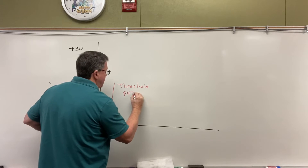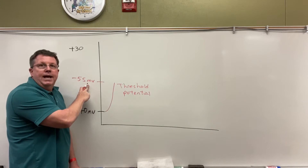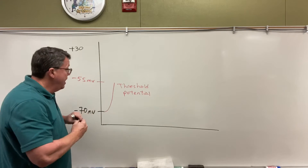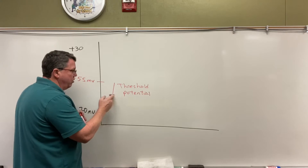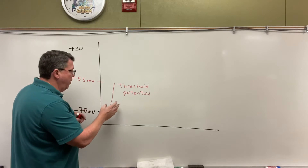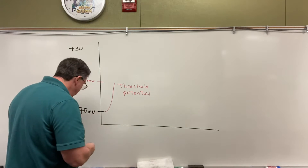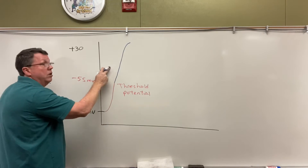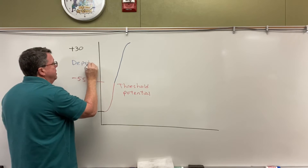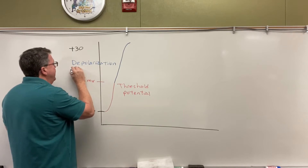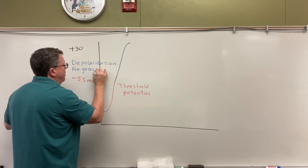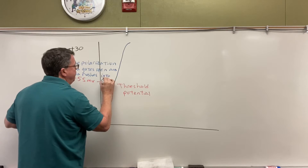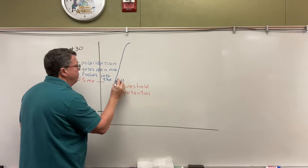I've seen books that say the threshold is at negative 55, and I've seen them say negative 60, so it just depends on what book you're looking at. For the most part, most of them say negative 55. Before threshold, I had sodium gates open and close, but only one or two, and the impulse doesn't go that far. Once we get to threshold, sodium gates open and sodium goes rushing into the cell. This is called depolarization. In depolarization, sodium gates open and sodium rushes into the cell, into the inside of the neuron.